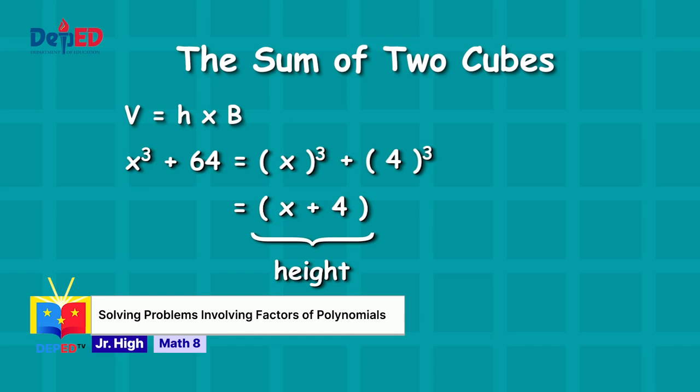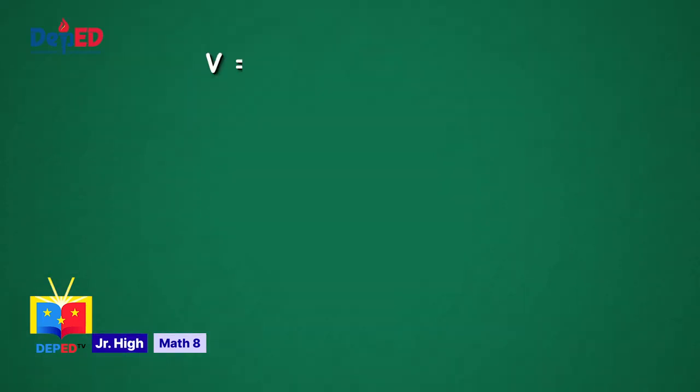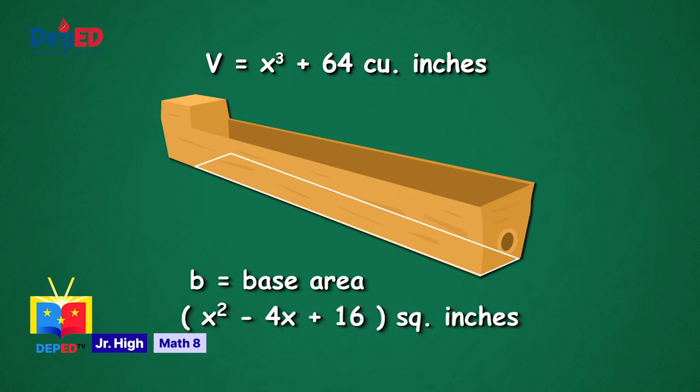We get the base area by squaring the first term of the binomial, x squared. Next, what operation should be here, addition or subtraction? The first operation in the trinomial factor must be opposite of the binomial. So given that the binomial factor shows a plus sign, this must be a minus sign. Then multiply the terms x and 4. We will get 4x. The last sign is always positive or a plus, and the last term is the square of 4. 4 squared is 16. Now that we have factored x cubed plus 64, what is the base area of the trough? The trough has a base area of x squared minus 4x plus 16 square inches.